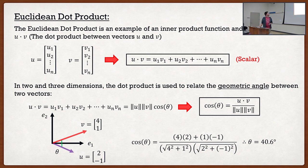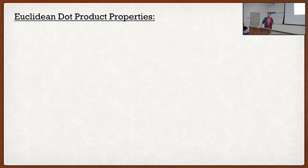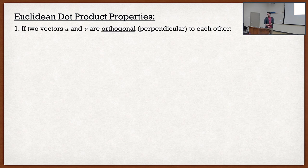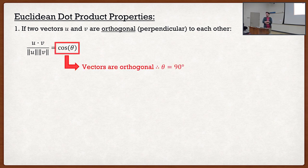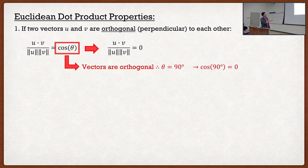Now, some dot product properties related to the idea that the dot product is used to find the angle between vectors. If two vectors are orthogonal or perpendicular to each other, u dot v equals zero. Why? The angle between them is 90 degrees, and cosine of 90 degrees is zero. So from there, with zero on the right-hand side, u dot v equals zero.